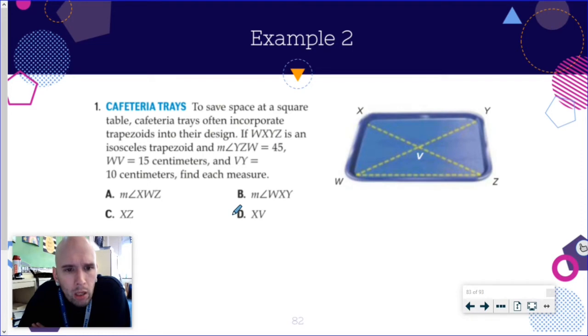There's WXYZ. The measure of angle YZW is 45. Now this is clearly not drawn to scale because this whole angle right here is 45 degrees. Super not drawn to scale at all.